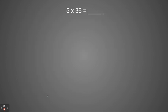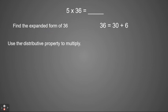So let's look at an example. If I have the problem 5 times 36, I'm going to start by finding the expanded form of 36. So 36 is equal to 30 plus 6. That's saying it has 3 tens and 6 ones. Then I'm going to use the distributive property to multiply.